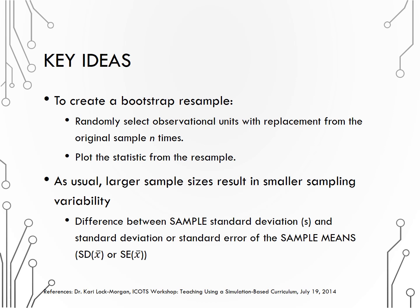In summary, to create a bootstrap resample, we will randomly select observational units with replacement from the original sample n times, where n is the sample size, and then plot the statistic from each resample. As usual, larger sample sizes result in smaller sampling variability. Be careful with this idea. There is a difference between the sample standard deviation, s, which is the variability in individual observations, and the standard deviation or standard error of the sample means, SD or SE of X-bar, which is the variability from one statistic in a sample to another statistic in a different sample. Larger sample sizes affect sampling variability, SD of X-bar or SE of X-bar — they will not impact the standard deviation of the individual observations, s.